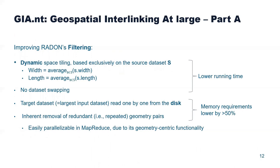We improved Radon in this work in several ways. Starting with filtering, we also employ a dynamic space-partitioning approach, but the dimensions of the equigrid depend exclusively on the geometries of the source dataset, defined as the smallest dataset in terms of number of geometries. We exclude the data swapping step to save time, and in this way we are able to avoid loading the target dataset into main memory, reading it one by one from disk instead. As a result, we reduce the memory requirements by more than 50%, and we further reduce memory requirements by employing an approach for inherently removing redundant pairs without using a hashmap. This makes our approach easily parallelizable on top of Apache Spark.